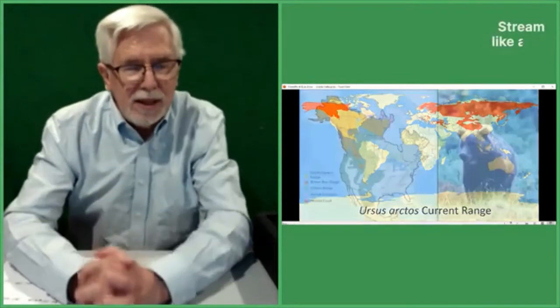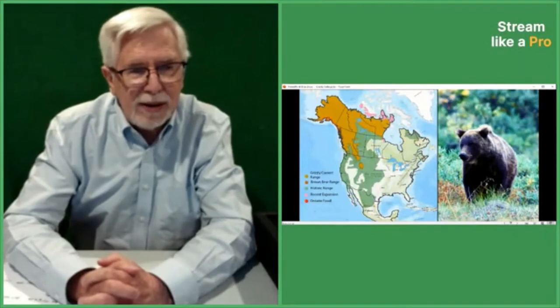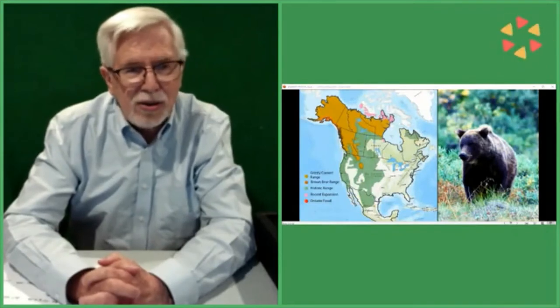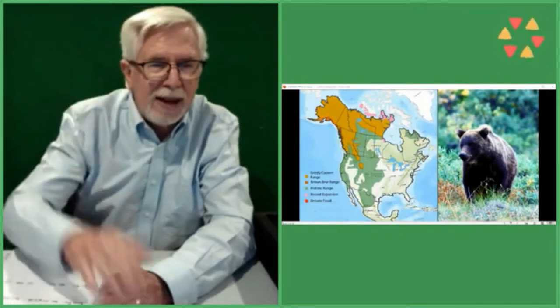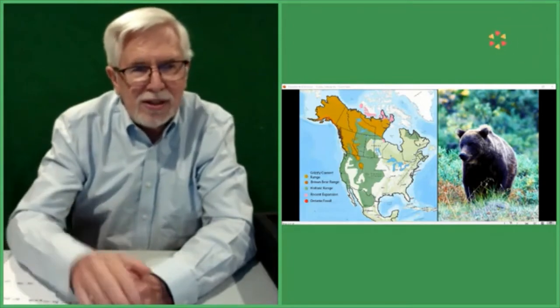There's only been one case where a grizzly or a brown bear in Italy actually threatened people, and that happened a number of years ago. And it was a bear that had actually been imported from someplace else to bolster the population, and its culture was not the same as the local bears. Since that incident, that bear was removed, and so were cubs, and now there have been no further incidents. Going to the next slide.